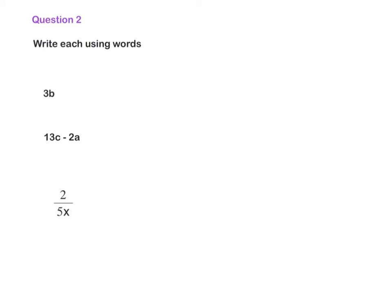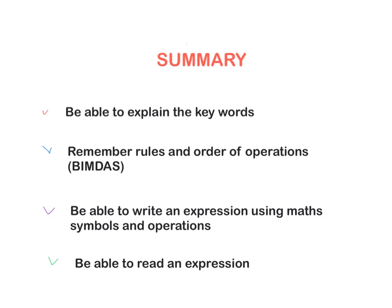Question 2: We need to write each using words. We need to be able to read an expression. What does it mean? 3b means 3 multiplied by b. The next one: 13c minus 2a. 13 multiplied by c, take away or minus 2 multiplied by a. And the last one is 2 divided - remember this line means divide - by 5 multiplied by x. Let's write it down then.